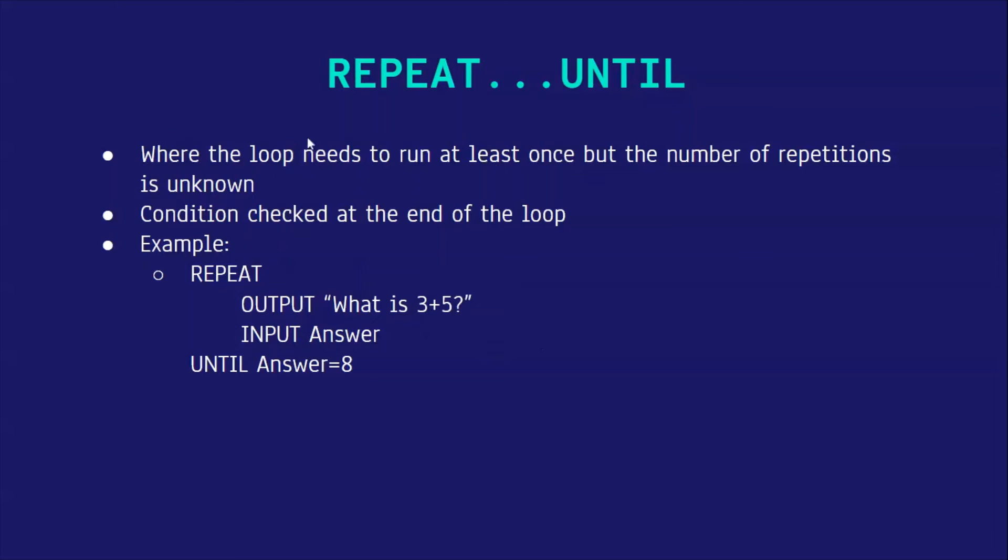Next, REPEAT UNTIL loop. This is used when the loop needs to run at least once, but the number of repetitions is unknown. This is because the condition is checked at the end of the loop. For example, it repeats asking what is three plus five and it inputs the answer until the answer is eight. So we keep asking the question again and again until it gets the response as eight.